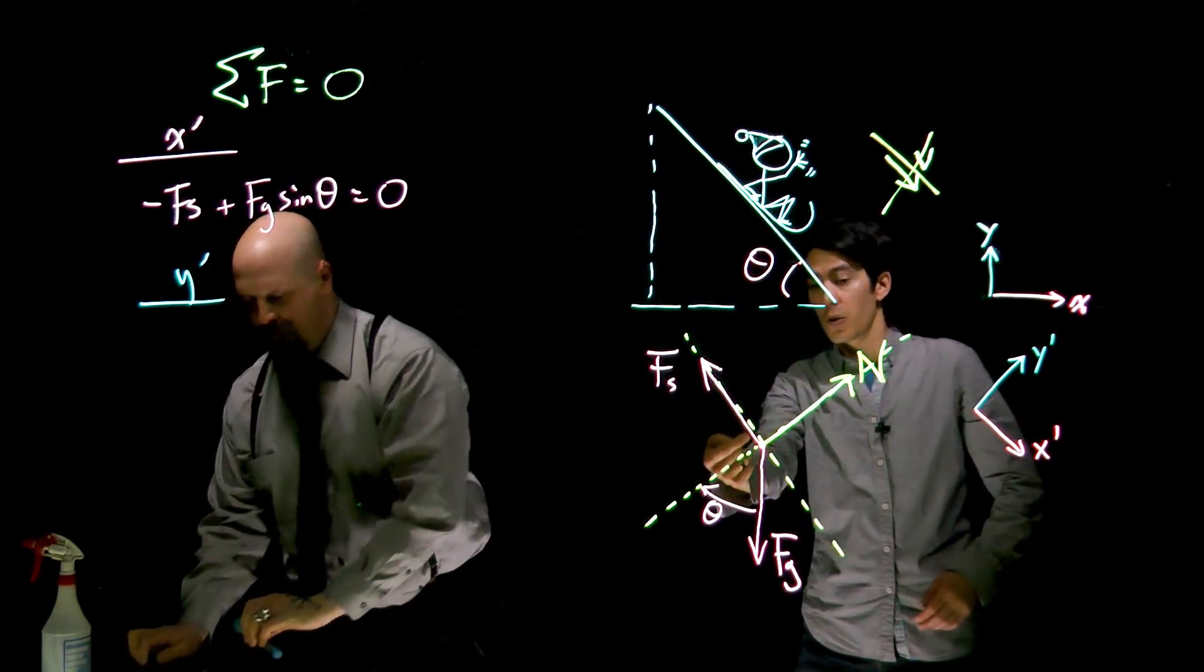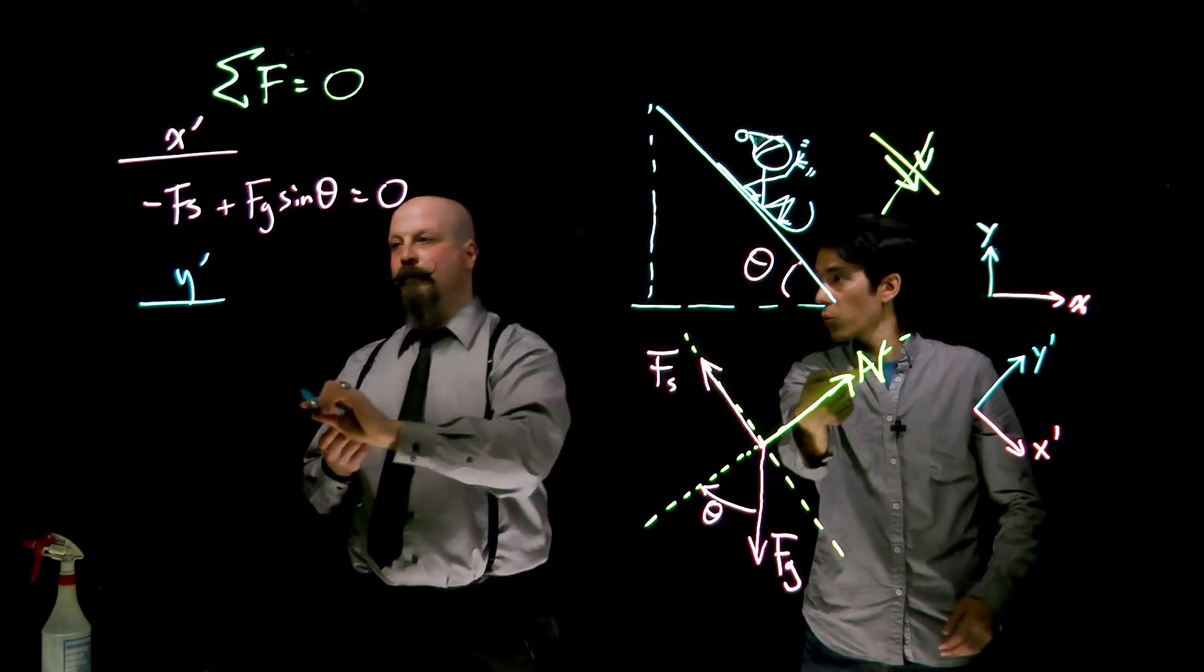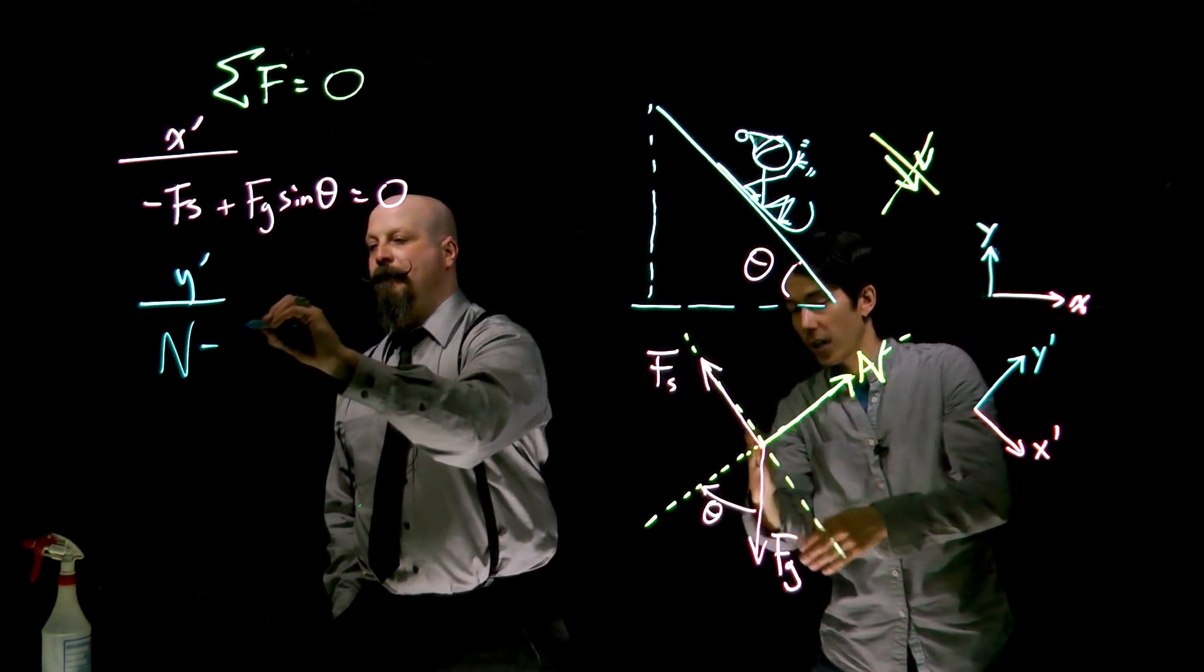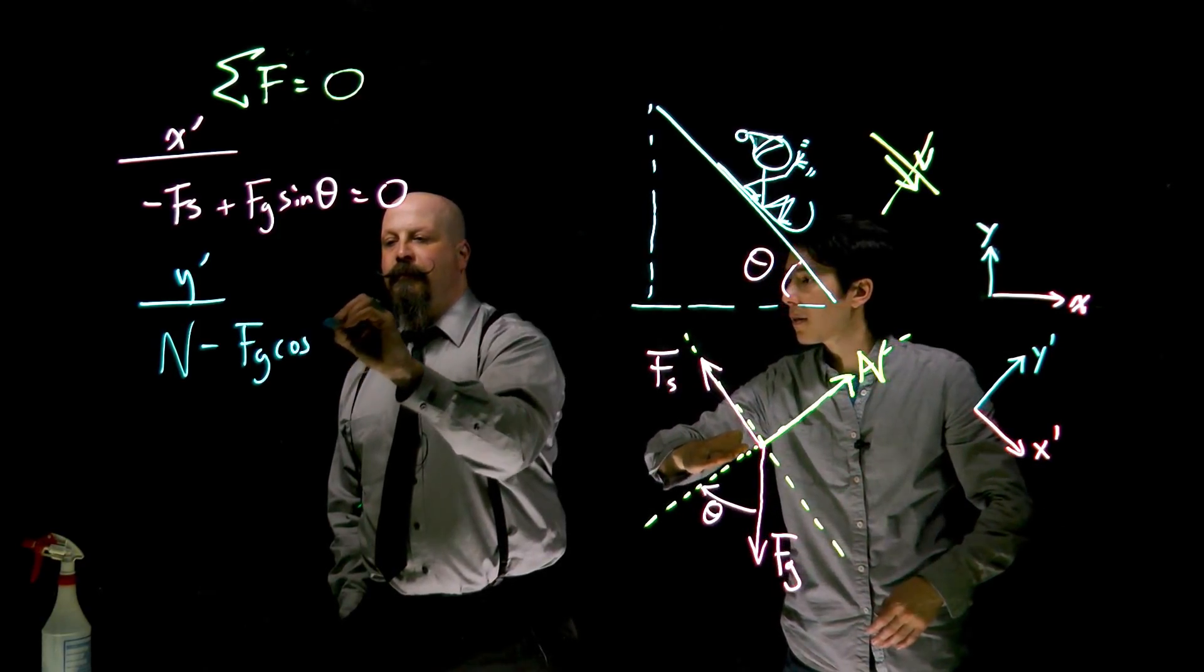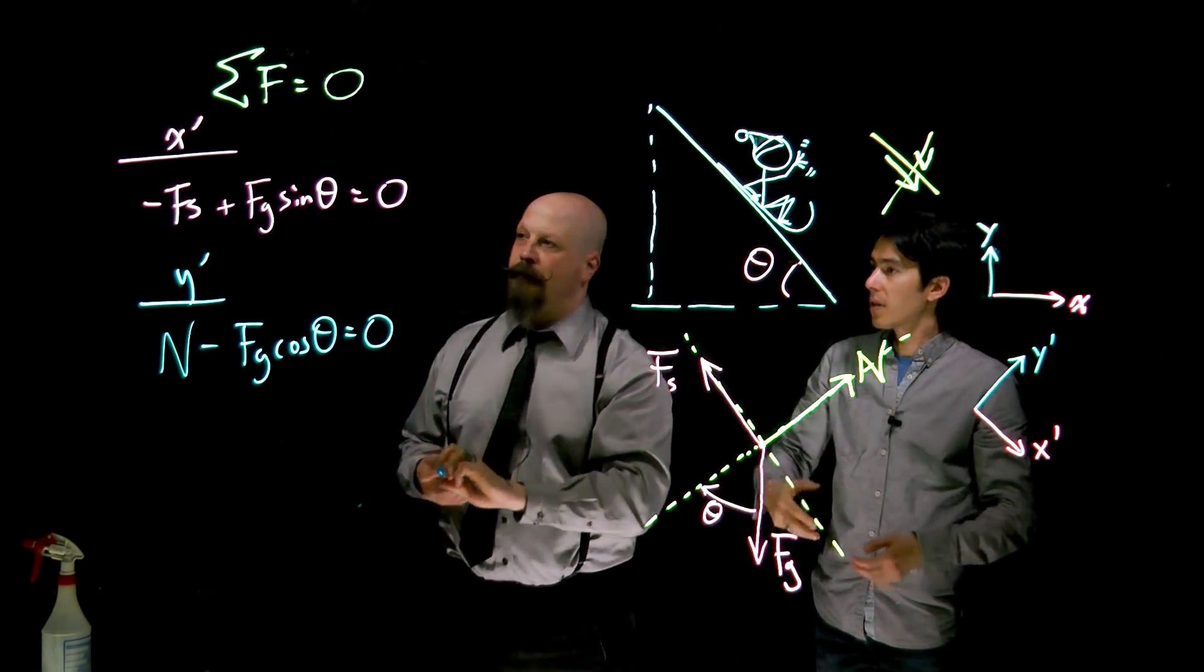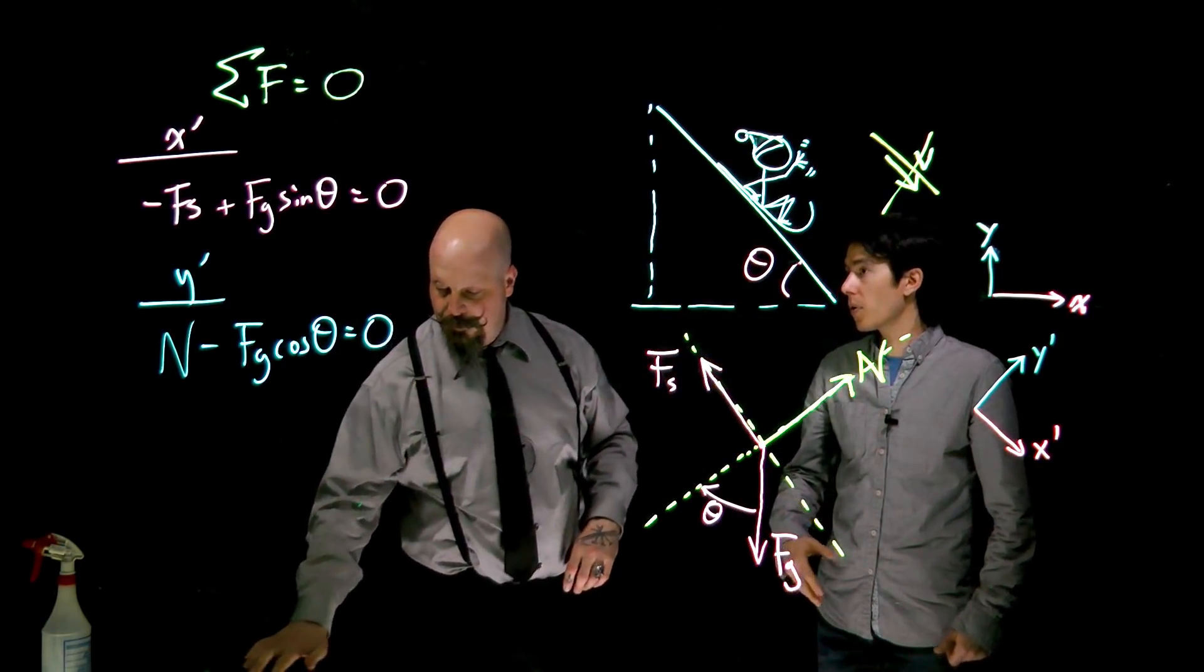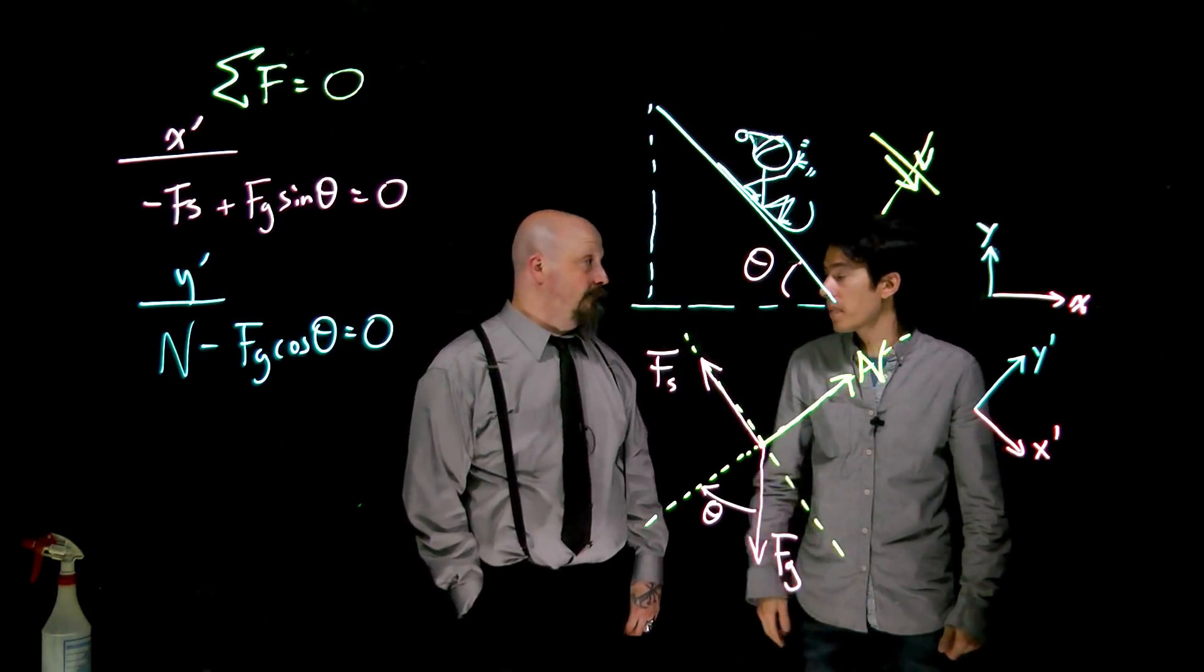In the y direction we've got the normal force that is strictly in the plus y prime direction, and we've got a component of gravity in the negative y direction. To get that we would do force of gravity times cos theta. Still two equations, they sum up to zero, but in this case we had only one set of components instead of two vectors, so the math is going to be easier on the finish.